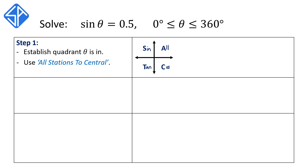Since our equation sine theta is equal to 0.5 is positive, this tells us that sine theta can be either in Q1 or Q2, since sine theta is positive in those two quadrants. So this means that our solution for theta has to lie in Q1 and Q2.